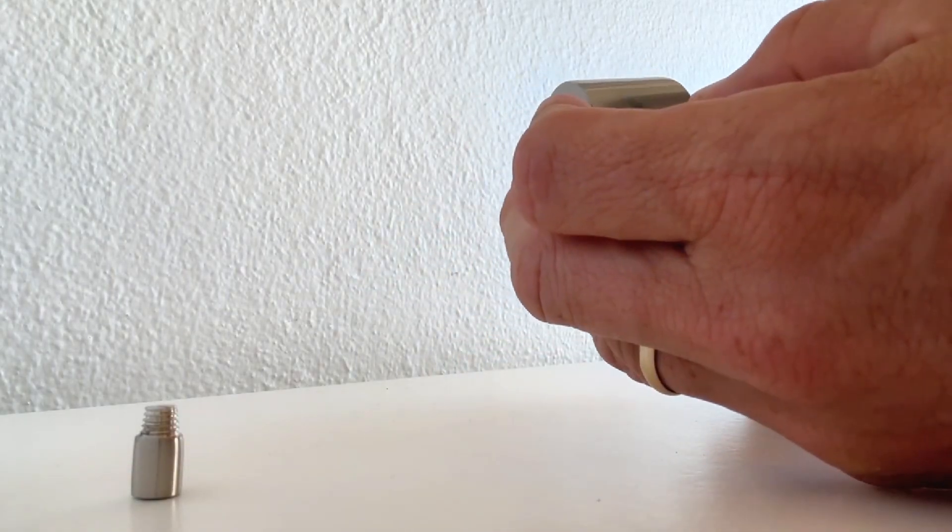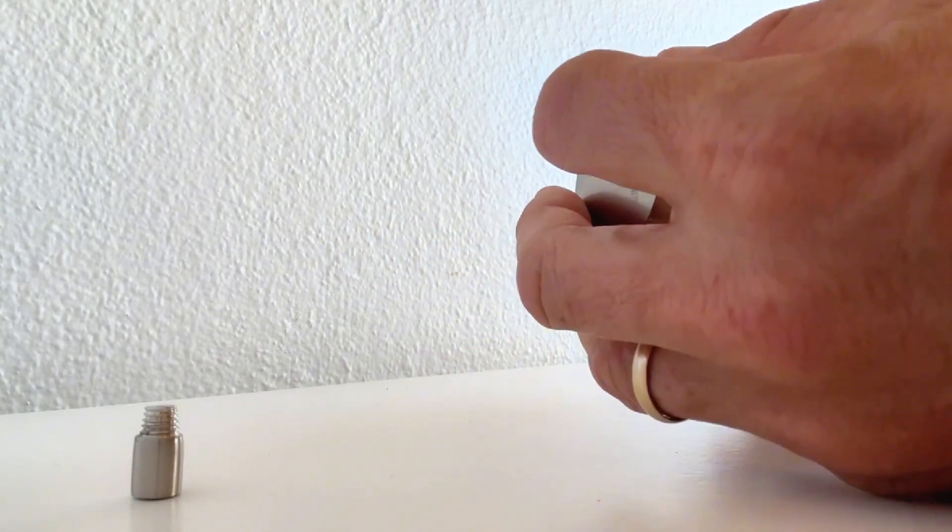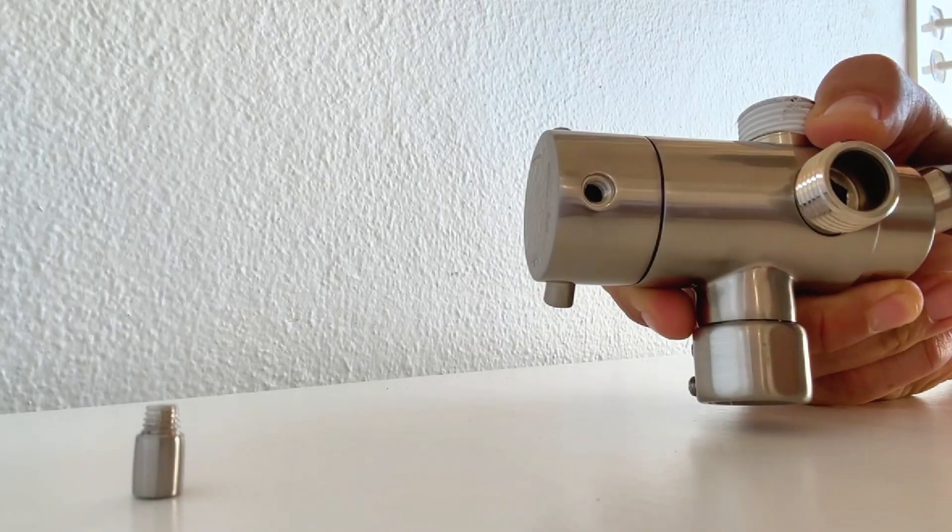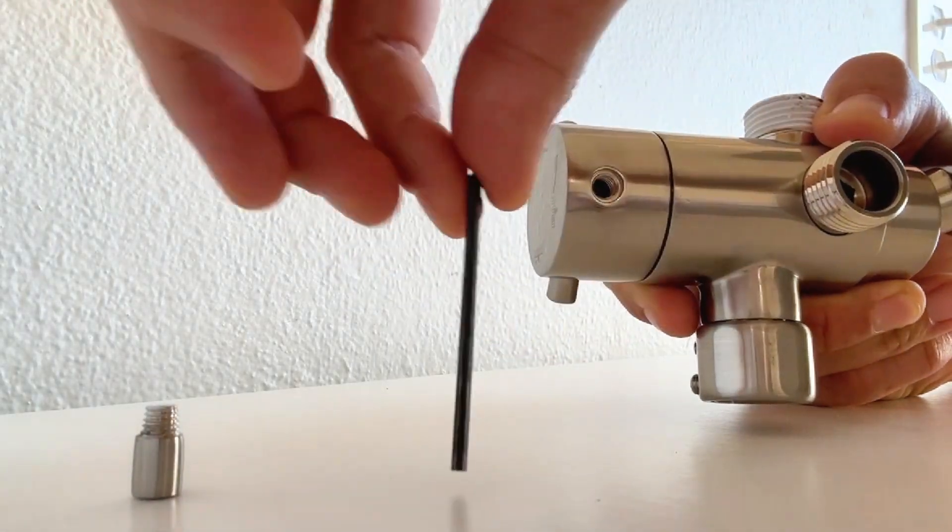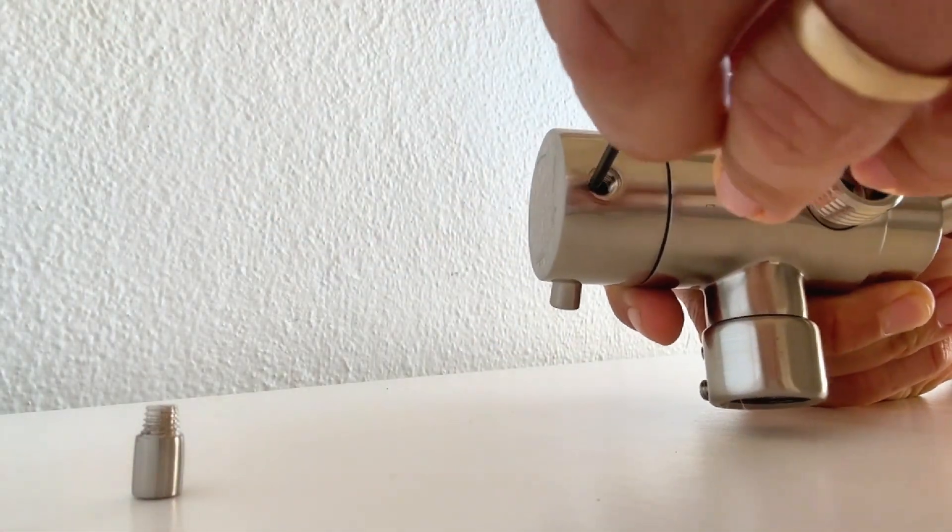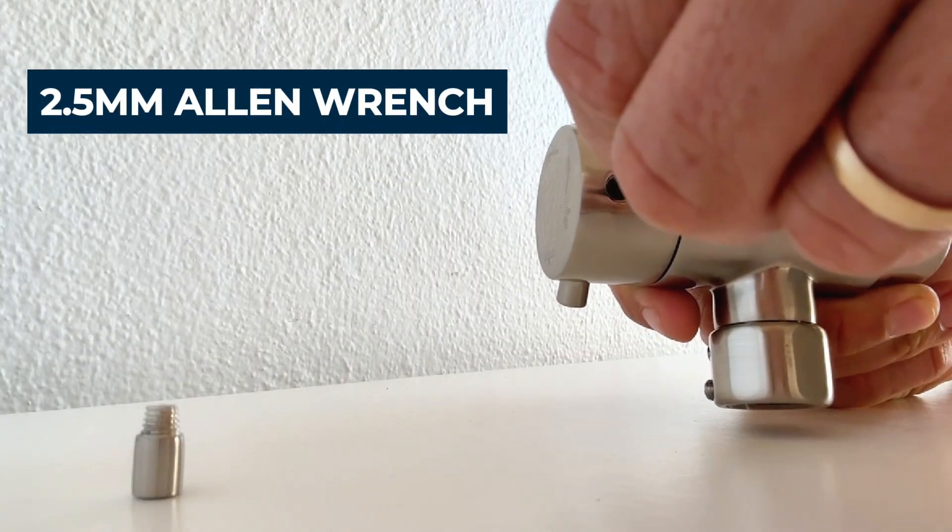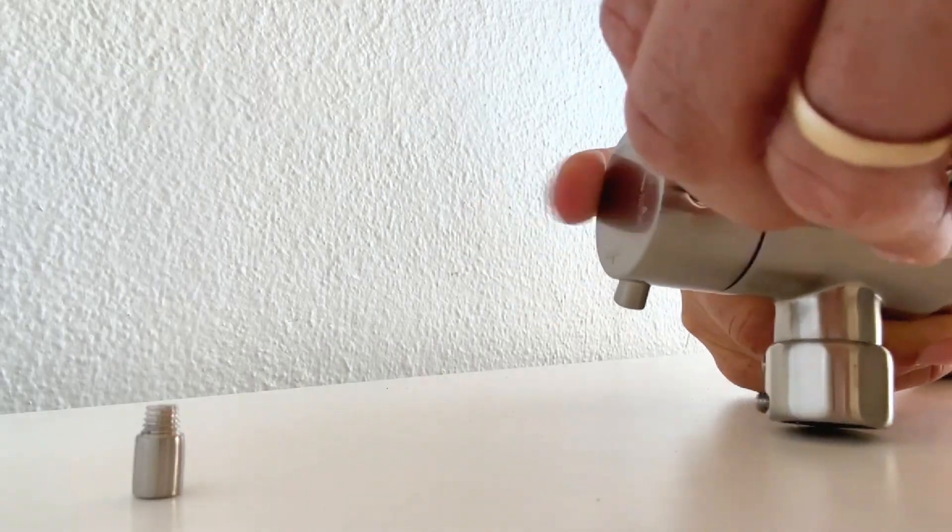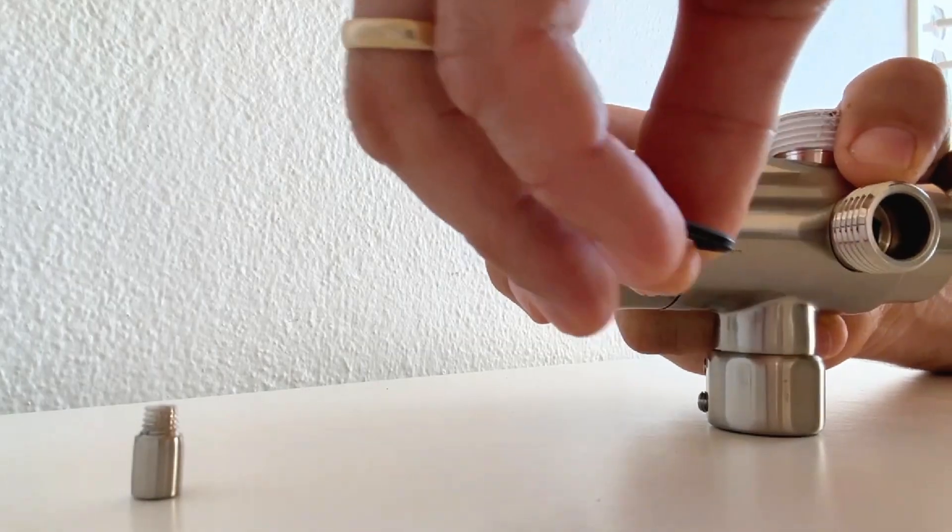Slide it on there. Then you'll take an allen wrench. This is a 2.5 millimeter allen wrench. Just make sure that's on there.